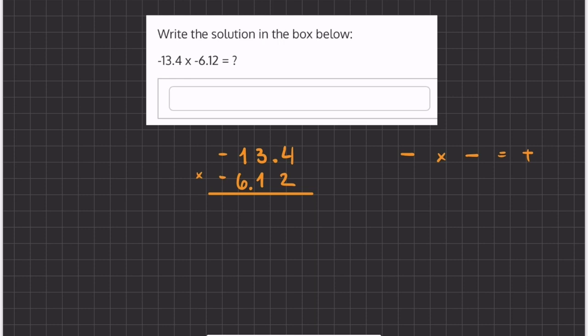So now we're going to start by multiplying this 2 by all the numbers above. We have 2 times 4, which is 8, 2 times 3, which is 6, 2 times 1, which is 1.